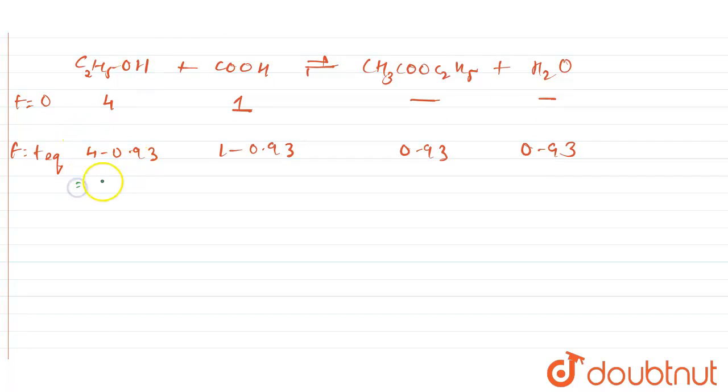Moving forward, we can write the values which we will get. That is 4 minus 0.93 equals 3.07, and this will be equal to 0.07, this is 0.93 and 0.93. Therefore, again similarly, rate equals K times C2H5OH multiplied by COOH.